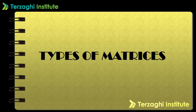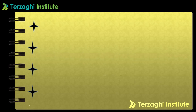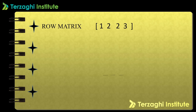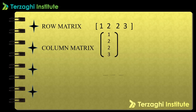The first type is the row matrix. In a row matrix, there is only one row and it can contain any number of columns. Next is the column matrix — it has only one column and can contain any number of rows.